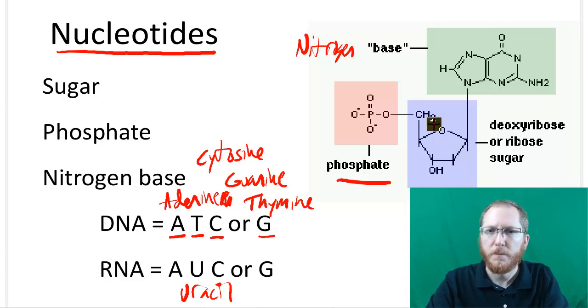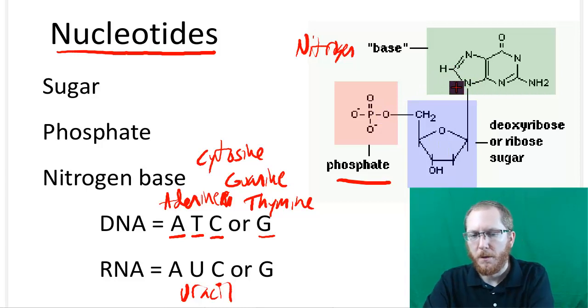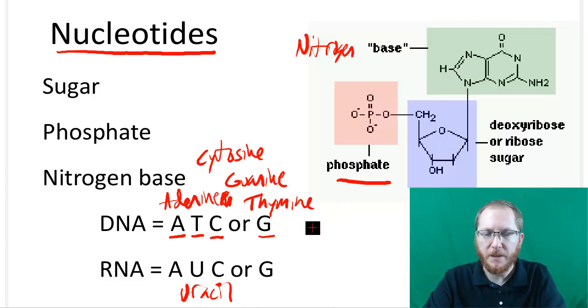There will be the sugar, phosphate, and nitrogen base. Every nucleotide that there is will have a sugar, a phosphate, and a nitrogen base. There will be four different types of nucleotides when it comes to DNA because some have A, some have T, some have C, some have G. There will also be four types of nucleotides with RNA.